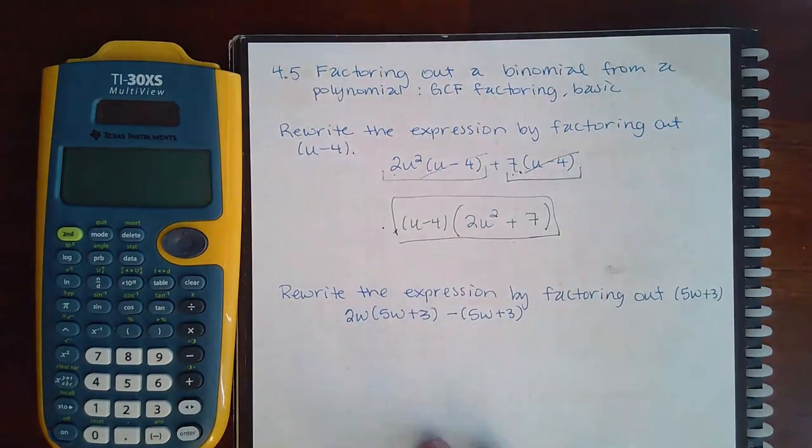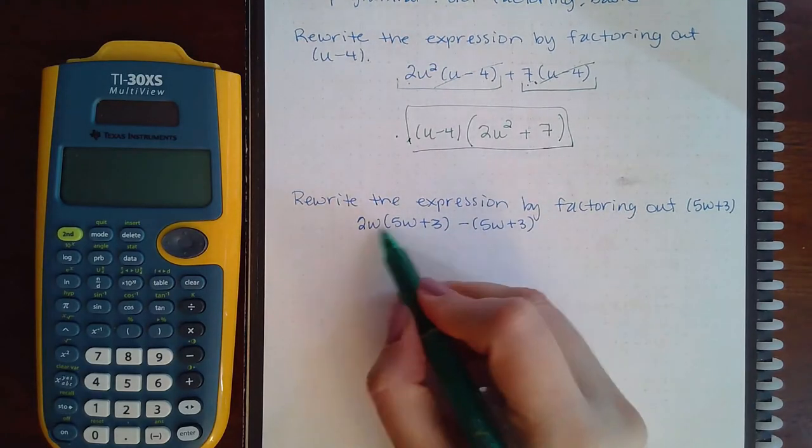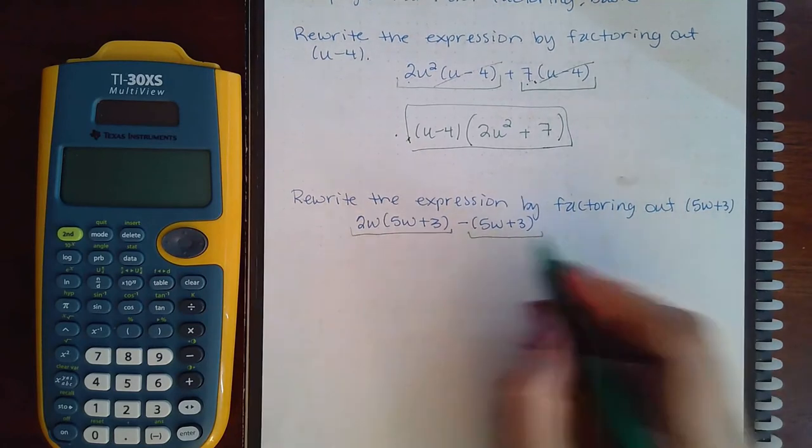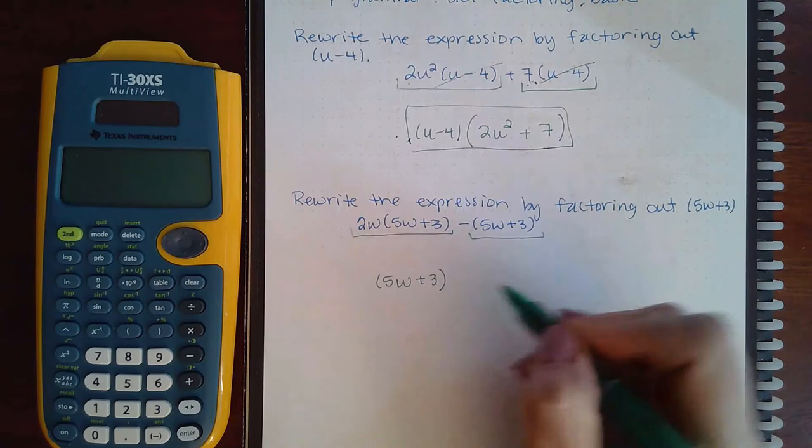Now same thing for here. I do have - these are multiplied, so this is one single term, and then this is one single term. The two terms do both have a (5w+3), but what am I left with?